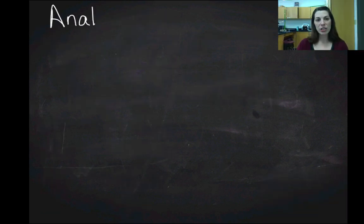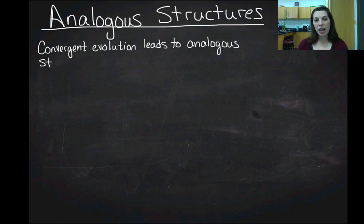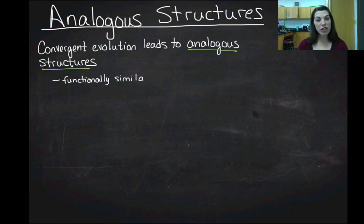Now analogous structures are in contrast to the homologous structures that we've already talked about. Analogous structures are when convergent evolution leads to structures that have the same function. So convergent evolution leads to analogous structures. So they are going to be functionally similar traits, but they do not share a common origin.